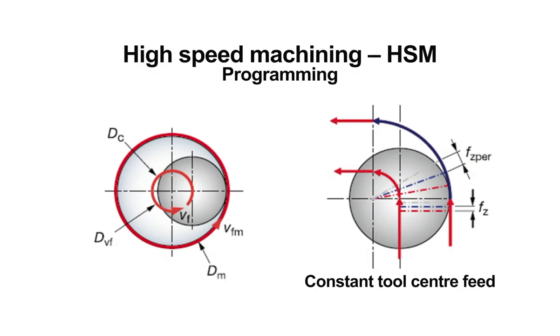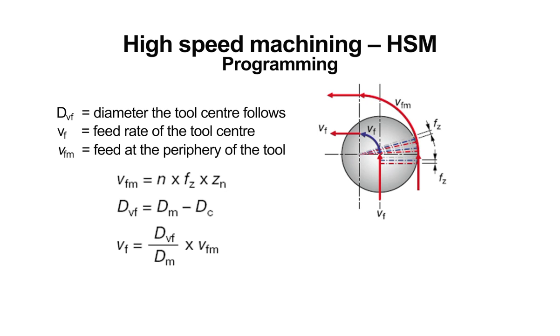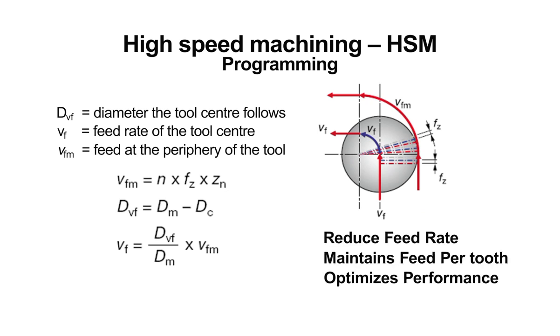When using high-speed machining techniques during an arc movement, the feed rate should be reduced so that the centerline feed rate of the tool equals that of the periphery. This will maintain the same feed per tooth, optimizing tool performance.